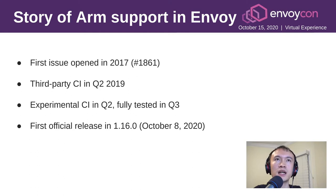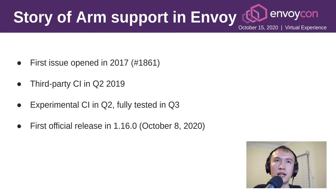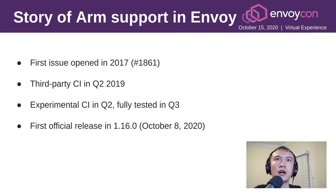The OpenLab folks added third-party CI in Q2 2019. This year, we got some support from ARM, and we were able to add some experimental CI in Q2. Then we got it officially fully tested in Q3. The first official release with ARM64 support was released last week — version 1.16.0 is the first version with an official ARM64 image build.